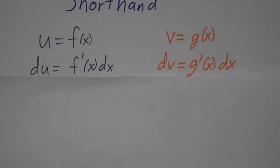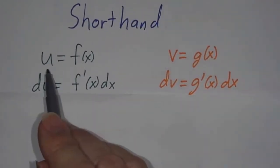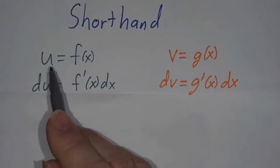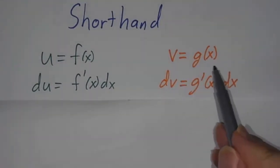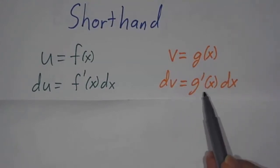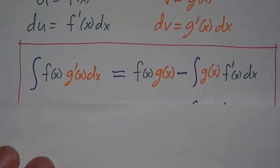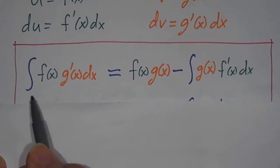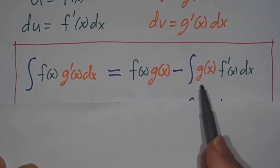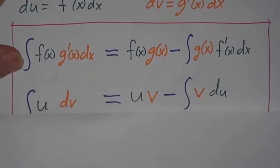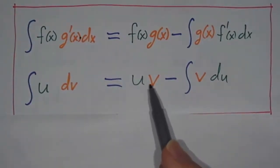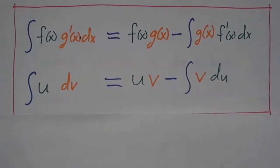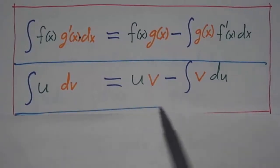There's a shorthand so we don't have to keep writing f's and g's. Instead of writing f, we call it u — much like in u-substitution — so du is f' dx. Instead of writing g, we write v, and dv is g' dx. Our integration by parts formula was the integral of f times g' dx equals f times g minus the integral of g times f' dx. In terms of u and v, it becomes: the integral of u dv equals u times v minus the integral of v du. This is the shorthand formula.